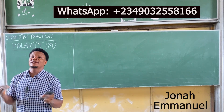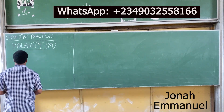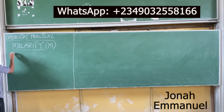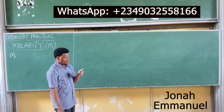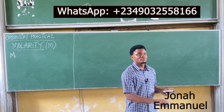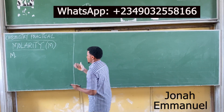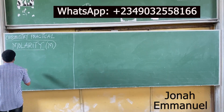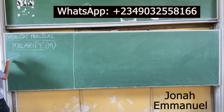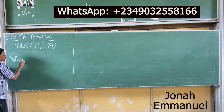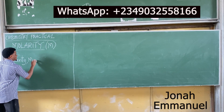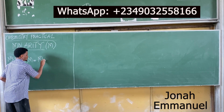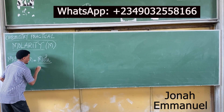Molarity is represented by capital M. Capital M is for molarity. Mathematically, molarity M is equal to mol all over volume.